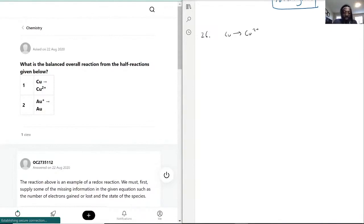The question asks what is the balanced overall reaction. We have Cu going to Cu²⁺, and we have Au⁺ going to Au.